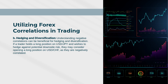Hedging and Diversification: Understanding negative correlations can be beneficial for hedging and diversification. If a trader holds a long position on USDJPY and wishes to hedge against potential downside risk, they may consider opening a long position on USDCHF, as they are negatively correlated.